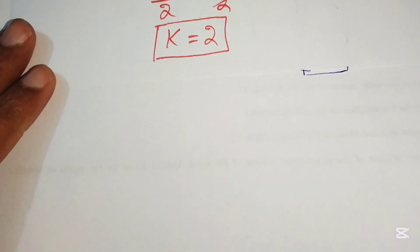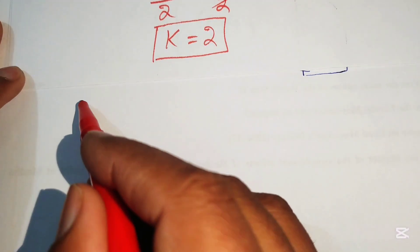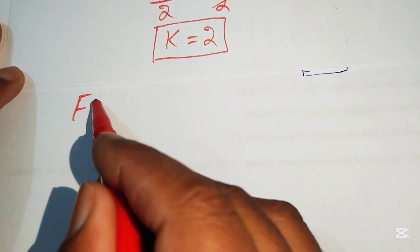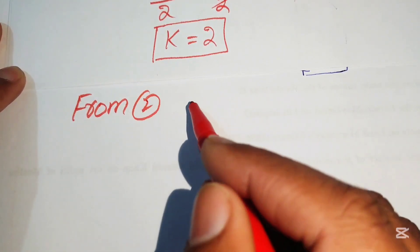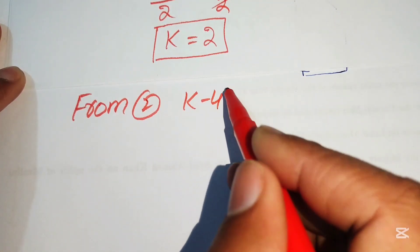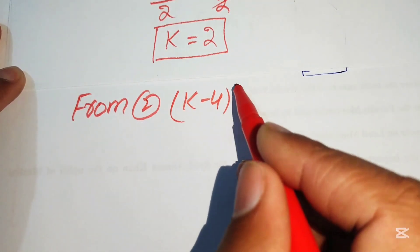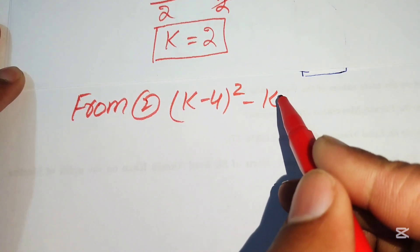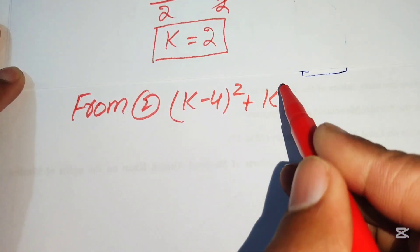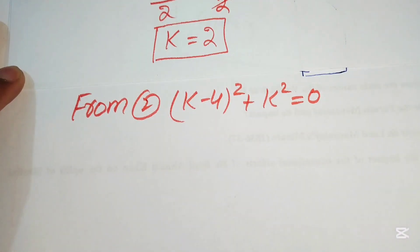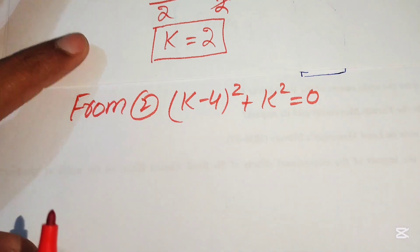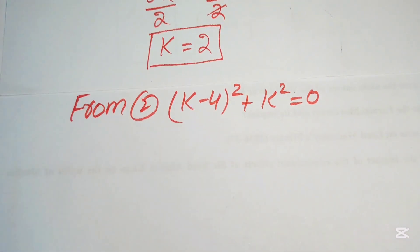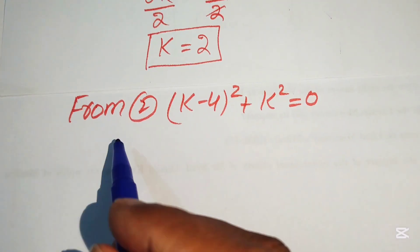To find the other roots, we solve Case 2. The second equation is (k − 4)² + k² = 0.